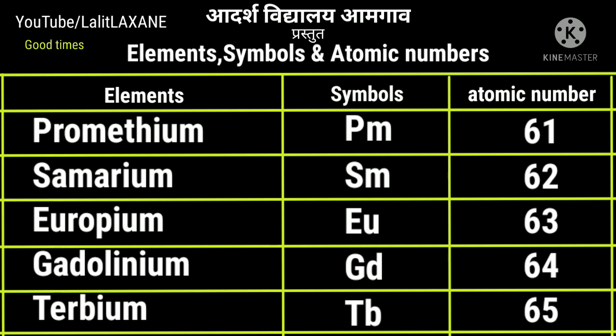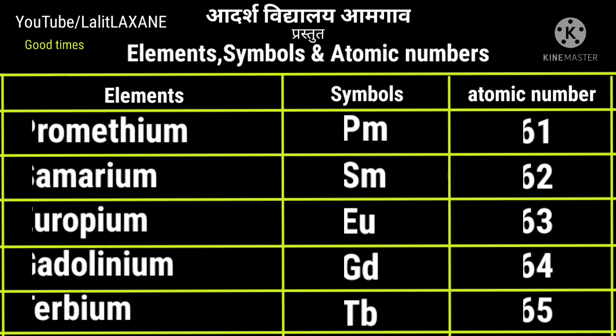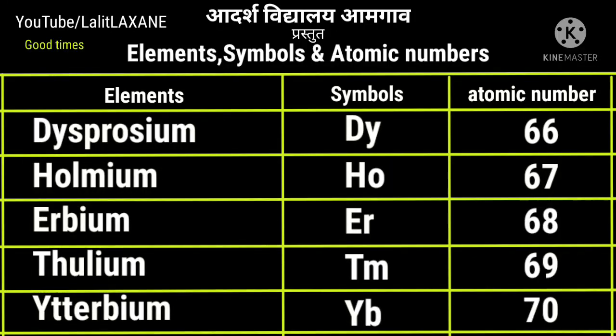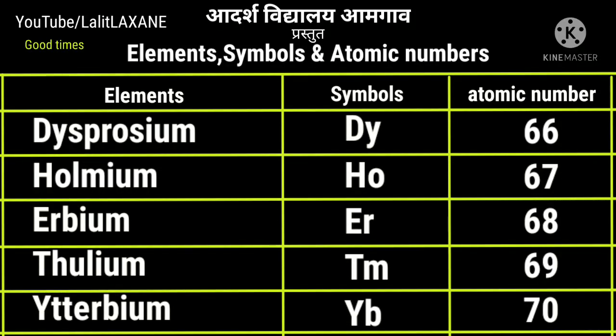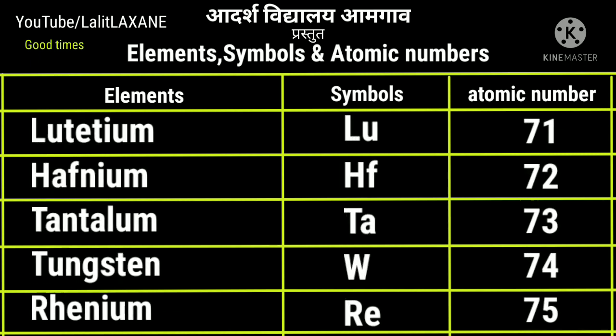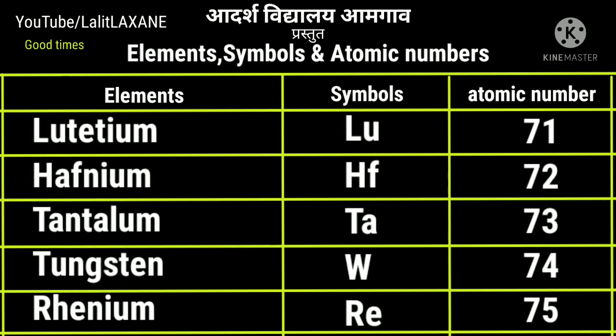Gadolinium Gd, 64 and terbium with symbol Tb and atomic number 65. Then with atomic number 66, dysprosium. Holmium Ho with 67. Erbium Er, 68. Thulium Tm with atomic number 69 and ytterbium Yb with atomic number 70. Then lutetium with atomic number 71, symbol Lu. Hafnium Hf with atomic number 72.